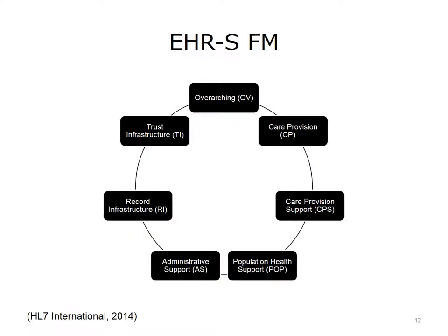The EHRS functional model contains seven sections: overarching, care provision, care provision support, population health support, administrative support, record infrastructure, and trust infrastructure.